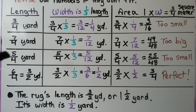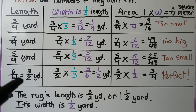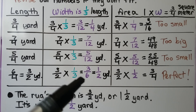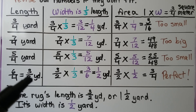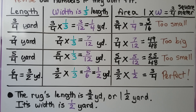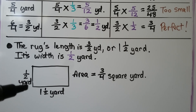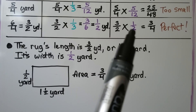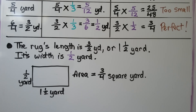Let's go up one more from five-fourths and try six-fourths, because five-fourths was too small. Six-fourths simplifies to three-halves, which is one-and-a-half yards. We multiply three-halves times one-third to find the width: three-halves times one-third equals three-sixths, which simplifies to one-half yard. Now for the area, we multiply three-halves times one-half and get three-fourths. It's perfect! The rug's length is three-halves yard, or one-and-a-half yards, and its width is one-half yard. One-half times three-halves equals three-fourths square yard.